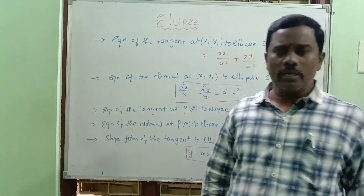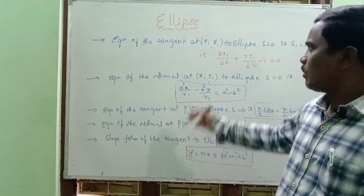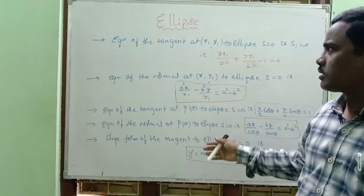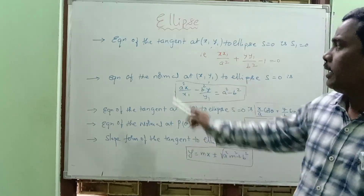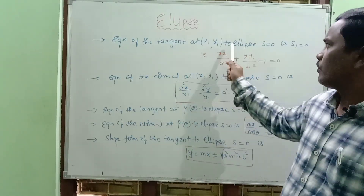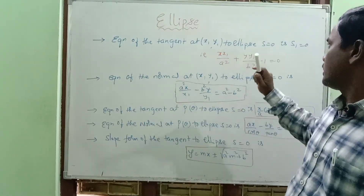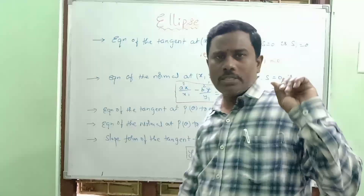Hi, welcome to my channel. The second question is the equation of the tangent at point (x1, y1) to the ellipse S equal to 0, which is S1 equal to 0.